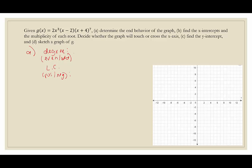The degree of this polynomial is going to be determined by looking at each factor of x and seeing what its largest power is. We have x cubed, this x has the largest power of 1, and this x has the largest power of 7. So the degree will be 3 plus 1 plus 7 — this is a degree 11 polynomial. What we care about is that 11 is an odd number.